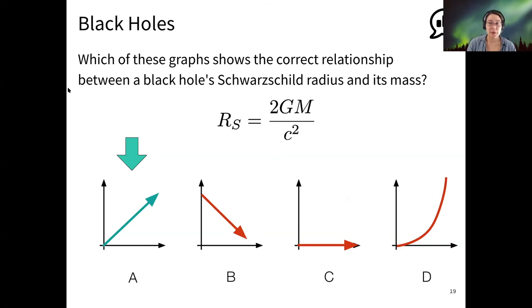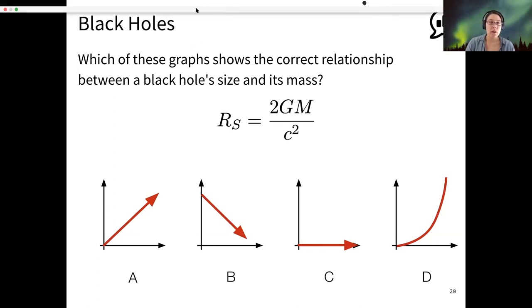Now I'm going to ask you a similar but different question and let you interpret what it means. Which of the graphs correctly shows the relationship between a black hole's size and its mass. So I see lots of votes for A still, and that's reasonable if you are working under the assumption that size means Schwarzschild radius. But what is the size of a black hole?